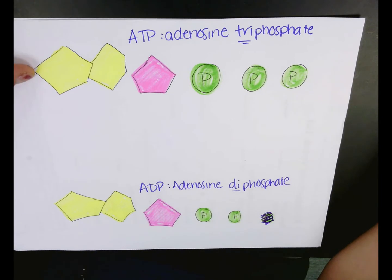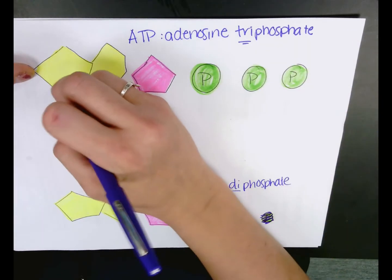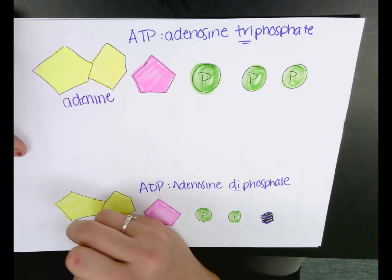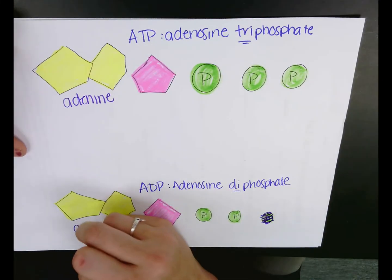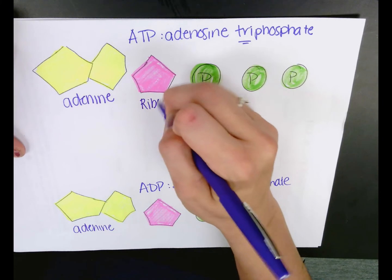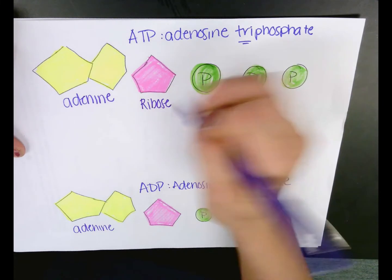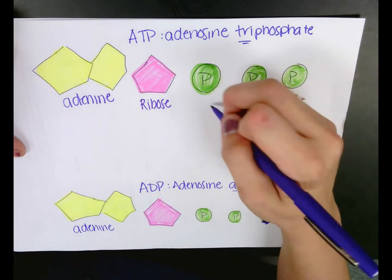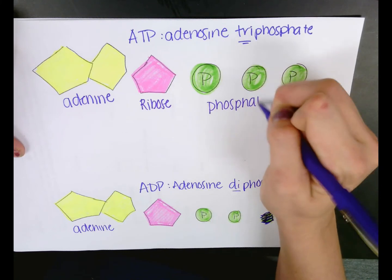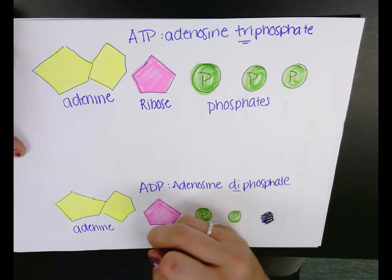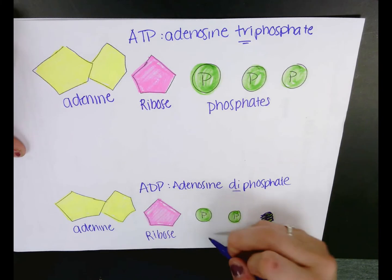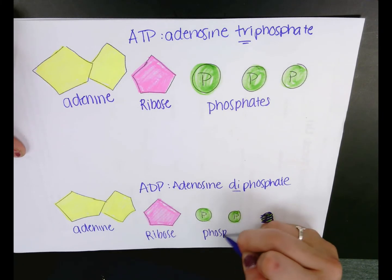You need to identify what each of these structures are. Up here we have adenine, and this is adenine down here too. We have ribose, which is just the sugar, and then we've got each of the phosphates. These two molecules are almost identical — the only difference is the number of phosphates.